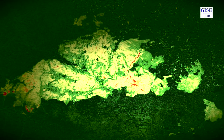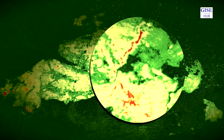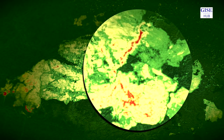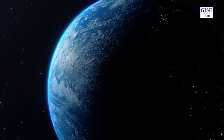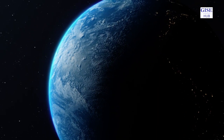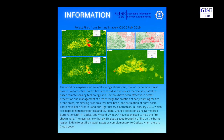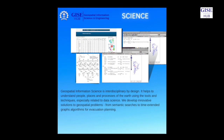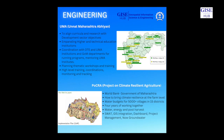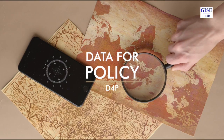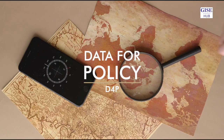Data tells you whether the shoe pinches, but maps actually tell you where the shoe pinches. The insights we are getting from geospatial information and geospatial systems are broadly helping us understand the business as usual. The GIC Hub at IIT Bombay has a primary focus on data for policy, or D4P.